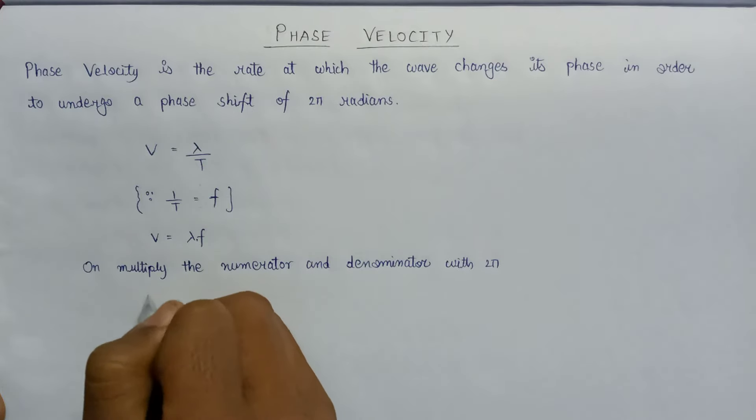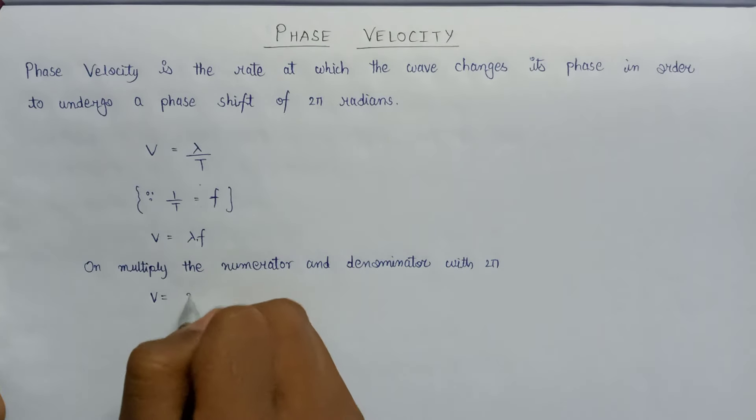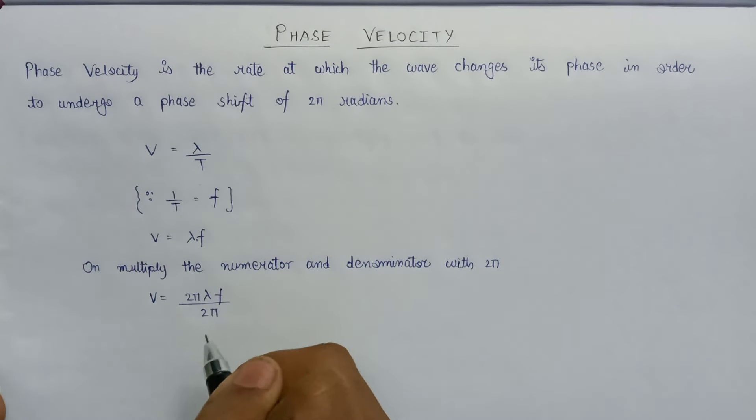We get v equals 2πλf over 2π. This expression can also be written as 2πf over 2π/λ, with lambda coming under the denominator part.